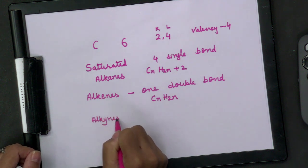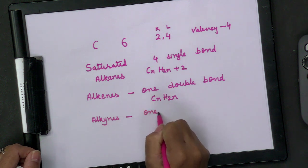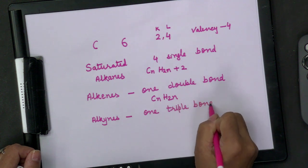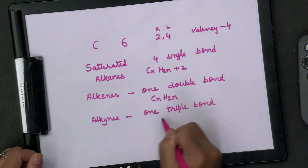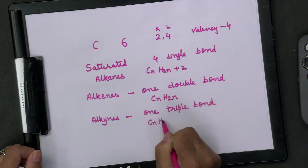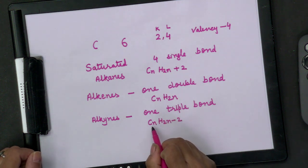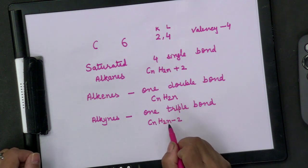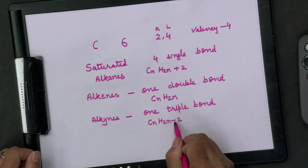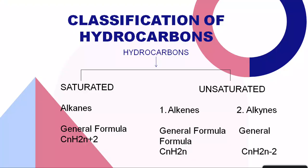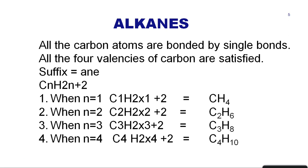The next category is alkynes. Alkynes have at least one triple bond between two carbon atoms. Their general formula is CₙH₂ₙ₋₂, meaning hydrogen atoms are double the number of carbon atoms minus two. So we can calculate the formulas of alkanes, alkenes, and alkynes using their general formulas.